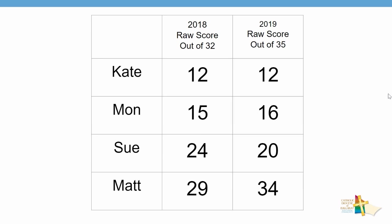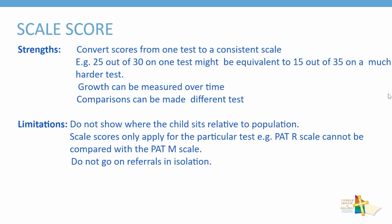Which leads us to a scale score. A scale score is the converted raw score onto one consistent scale. For example, 25 out of 30 on one test might be equivalent to 15 out of 35 on a much harder test. Using a scale score we can measure growth over time, and comparisons can be made across different tests in the same series. Limitations are that the scale score does not show where a child sits relative to the population. Scale scores only apply for a particular test — for example, the PATR scale cannot be compared with the PATM scale, nor could a NAPLAN maths score be compared to a NAPLAN writing score. Scale scores also do not go on referrals in isolation.